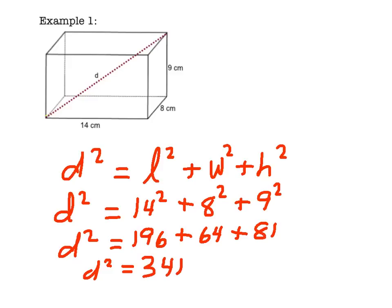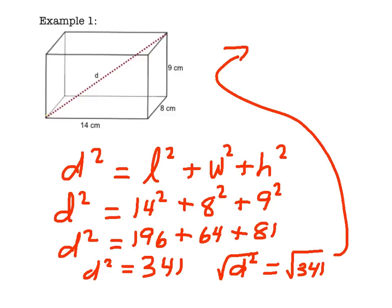Our last step is to find the square root of the total. So the square root of D squared is equal to the square root of 341. And the square root of 341 will be the length of our diagonal, and that turns out to be 18.466. I'm going to round that to the tenths place, and say that's going to equal 18.5 centimeters.